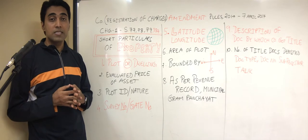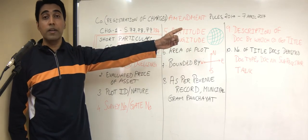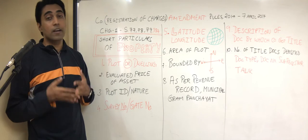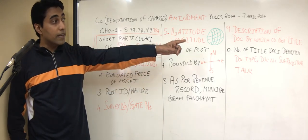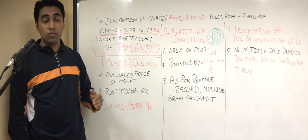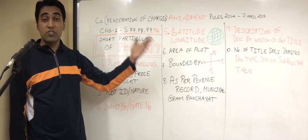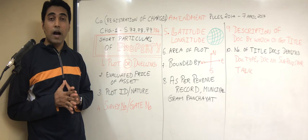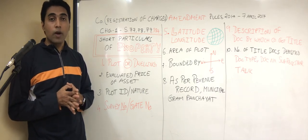Going further, the description of the document by which the company got title to the property — which was not required earlier — now has to be disclosed in CHG-1, including how the company acquired title to that particular property. Further details include the number of title documents deposited with the bank or financial institution where the charge is being created. There is a table in CHG-1 asking for the document type, document number, and the sub-registrar office, taluk, or district where that property is situated.